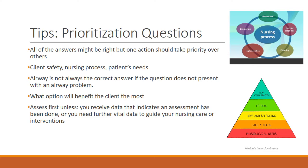When looking at options for prioritization, consider which intervention will benefit the client the most. For example, if a patient has an O2 sat of 88% and your choices are 2 liters or 10 liters of oxygen, think about the worst case scenario. Putting them on 2 liters might not effectively raise their stats. You might look at putting them on 8 to 10 liters — trying to figure out what option will be most impactful in maintaining their health and well-being.